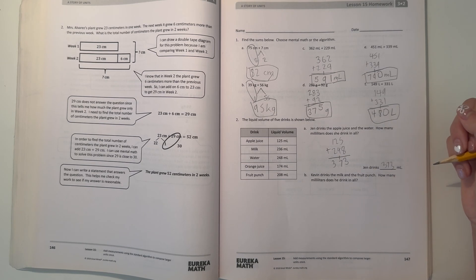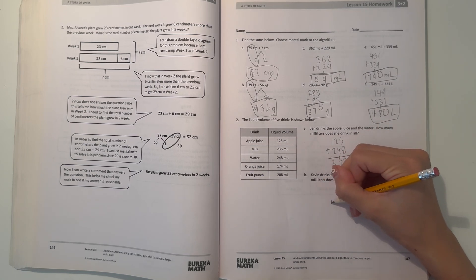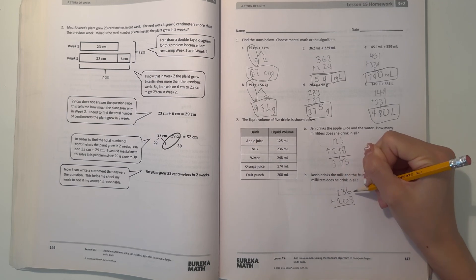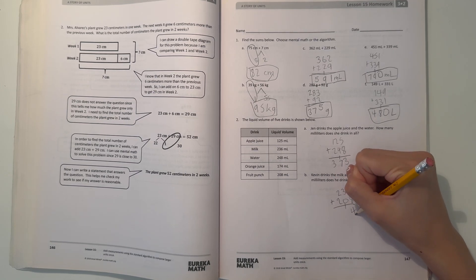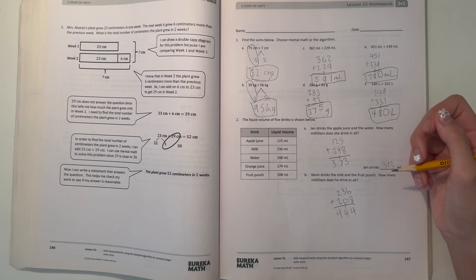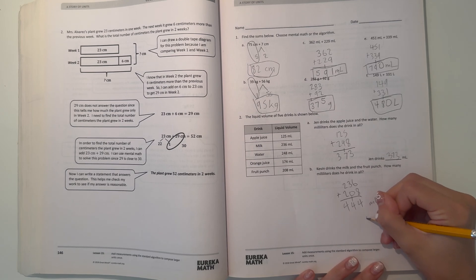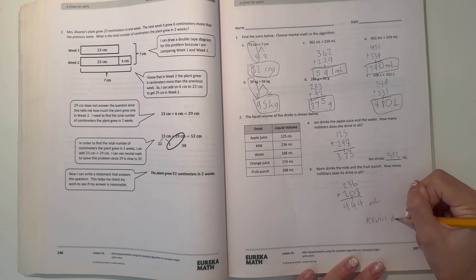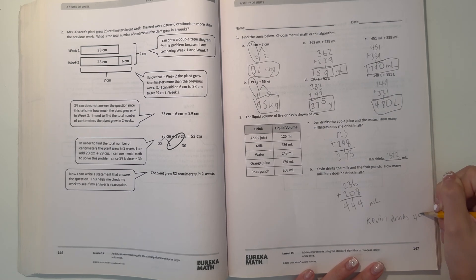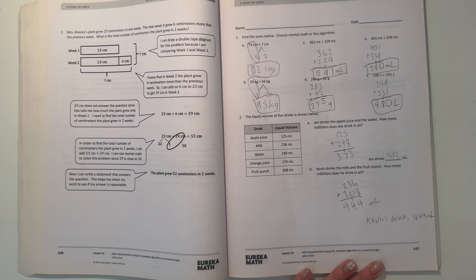Part B: Kevin drinks the milk and the fruit punch. How many milliliters does he drink in all? He drinks the milk which has 236 and the fruit punch is 208. 6 plus 8 is 14, carry the 1. 3 plus 0 is 3, plus 1 is 4. 2 plus 2 is 4. So 236 plus 208 is 444 milliliters. Kevin drinks 444 milliliters.